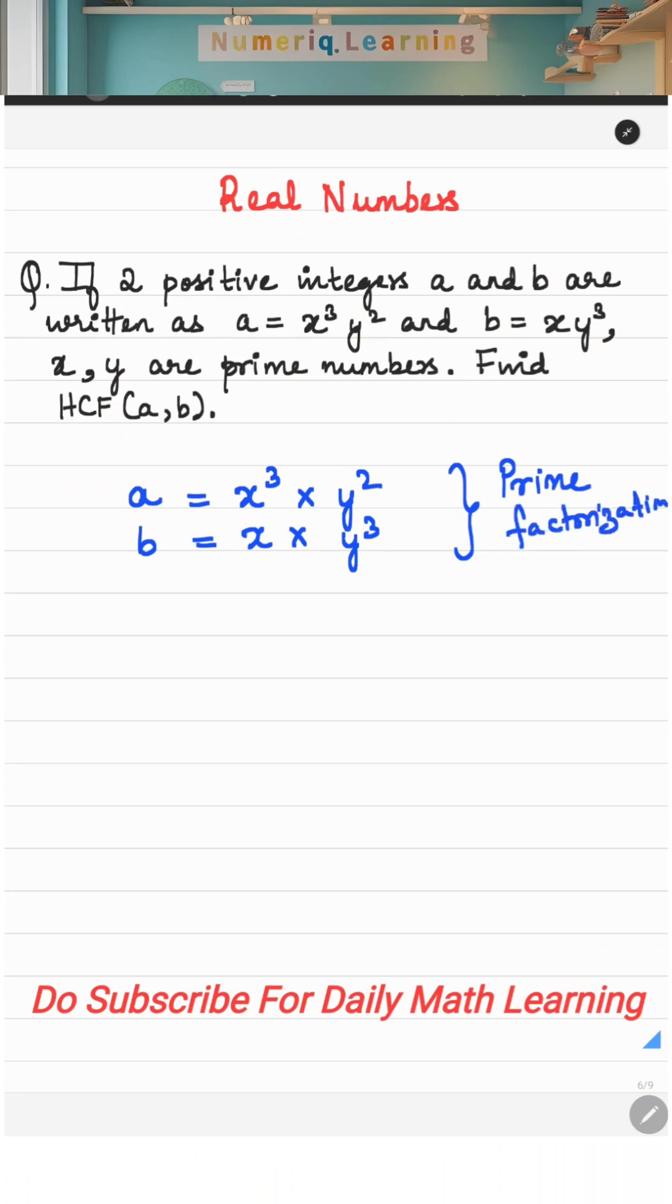Now you have to find the highest common factor of a comma b. The easiest way to find the HCF is for every common factor, take the lowest power. Now for example, x is a common factor among a and b, so take the lowest power.